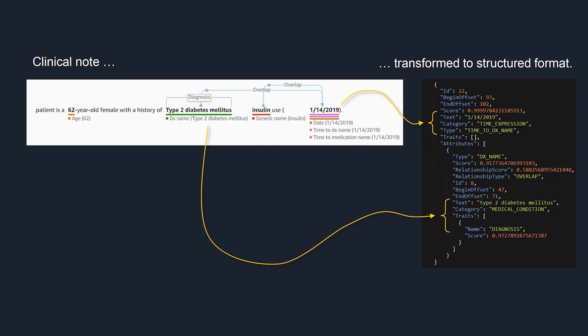Let's take the example of a doctor's clinical note that describes a 62-year-old female patient with a history of type 2 diabetes who uses insulin since January 2019. Medical natural language processing extracts key information like the diagnosis — type 2 diabetes — the date — January 2019 — and the medication — insulin. This information is identified and then put into a structured format so it can easily be queried and searched.